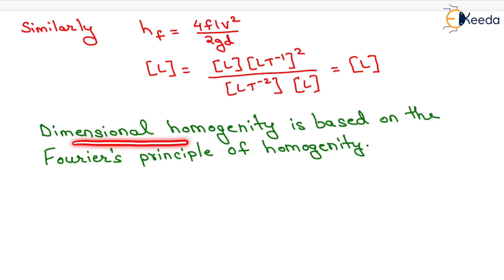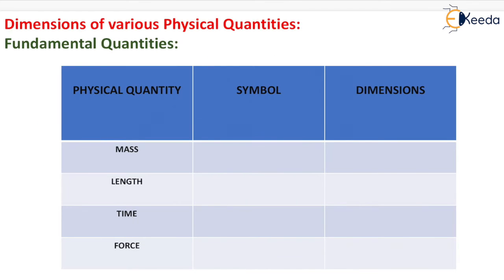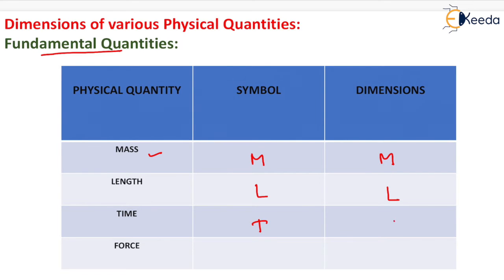Dimensional homogeneity is based on Fourier's principle of homogeneity. Now, the dimensions of various physical quantities — the fundamental quantities: for mass, the symbol is M and the dimension is M; for length, the symbol is L and the dimension is L; for time, the symbol is T and the dimension is T.